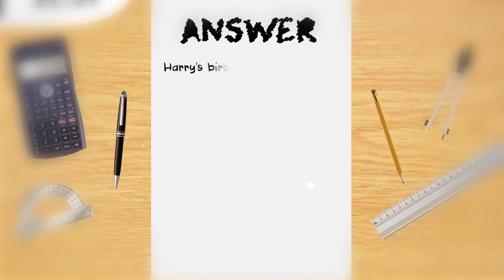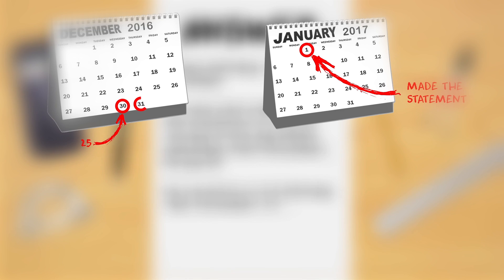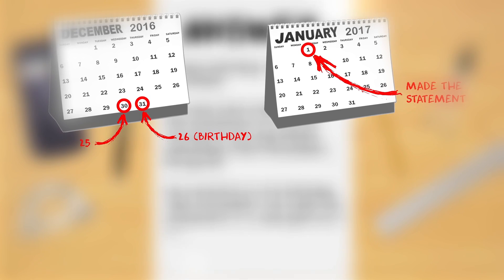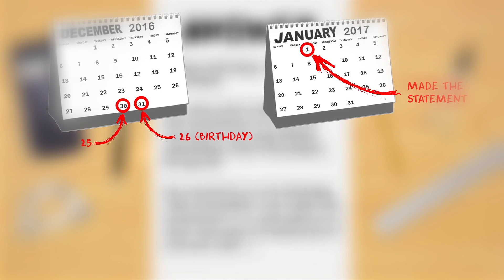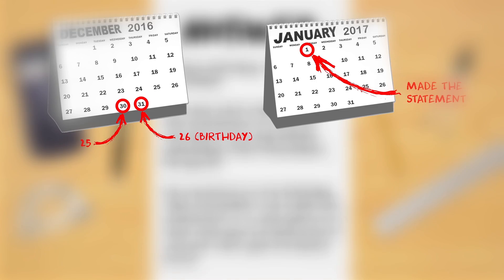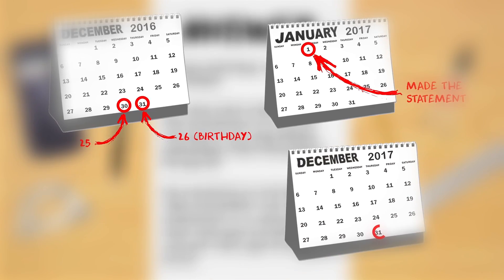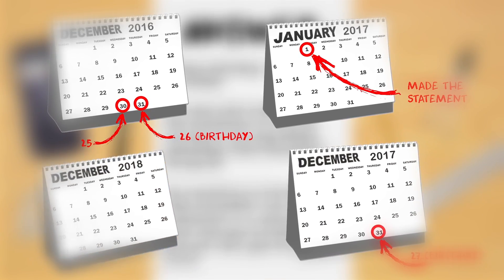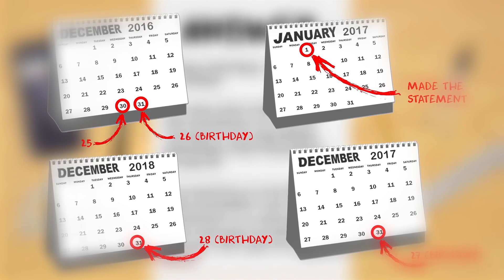Answer. Harry's birthday is on the 31st of December. He must have made the statement on the 1st of January as the day before yesterday, the 30th of December, he was 25. He then turned 26 on the 31st of December, his birthday. He made his statement in a new year, so in that year he would be 27 and the next year he would be 28.